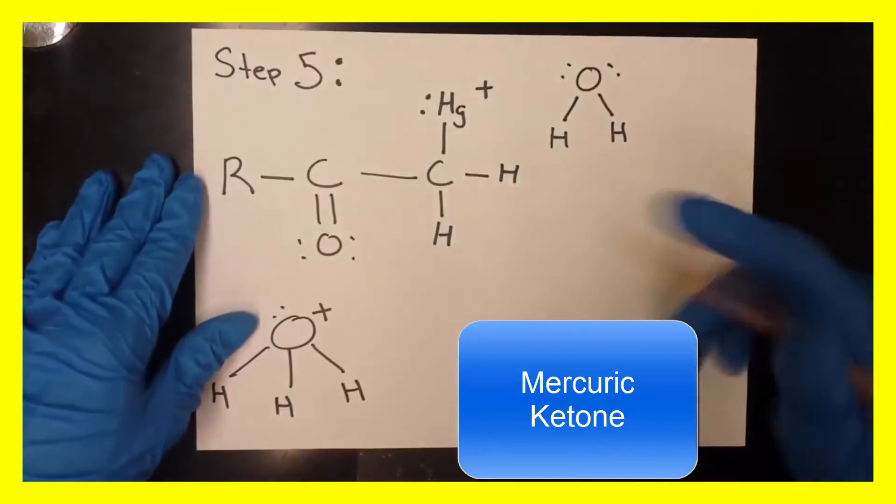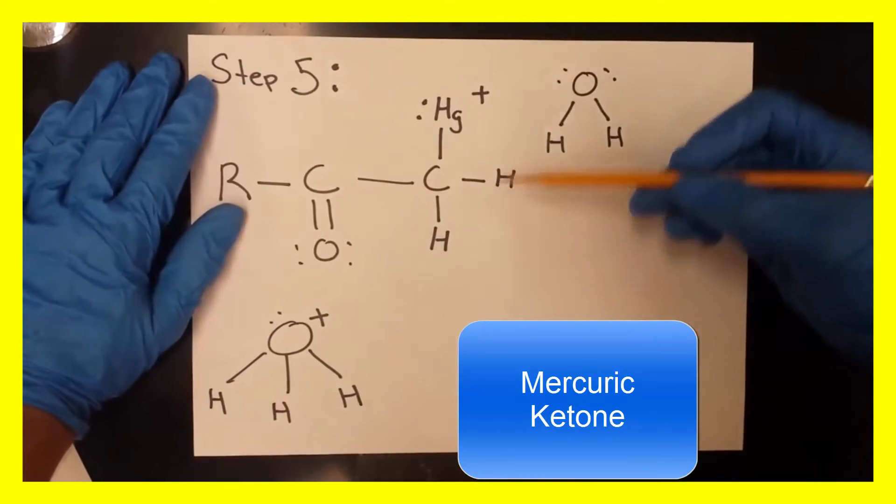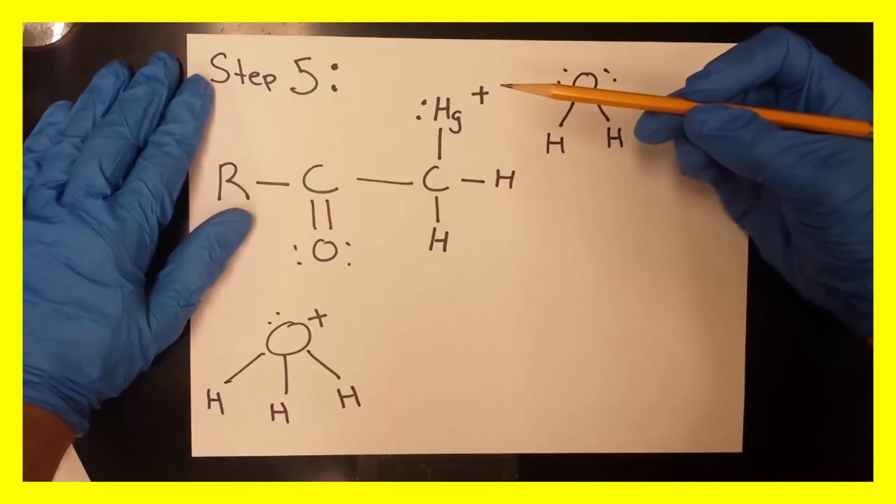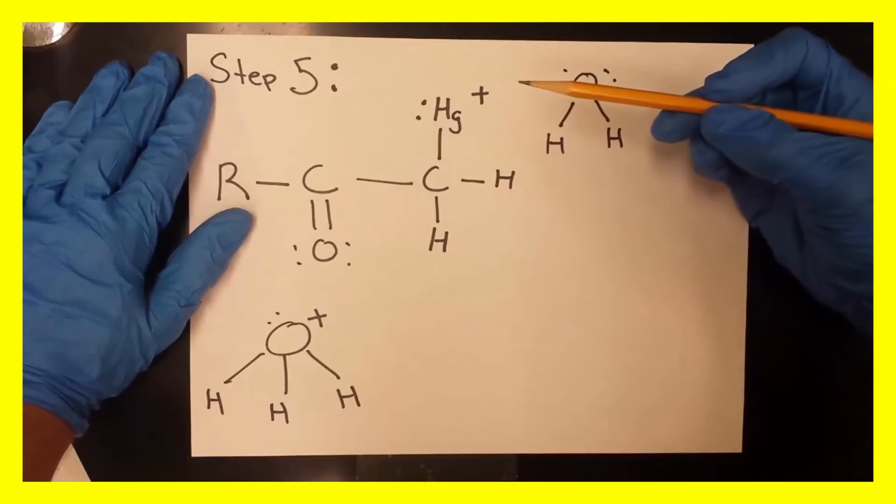Coming back to here now, we're going to have a double bond here, two hydrogens and mercury. So now this is the step where we're going to try to get rid of the mercury.